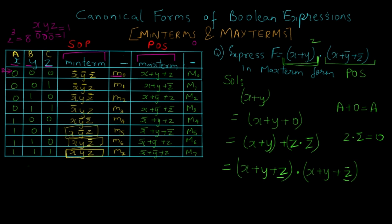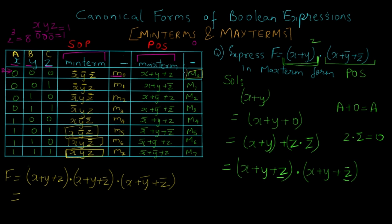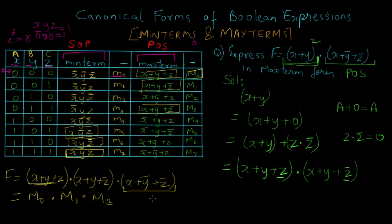So the final answer is: f equals (x OR y OR z) AND (x OR y OR z complement) AND (x OR y complement OR z complement). To represent this with max term designations, comparing with the table I can see (x OR y OR z) is M0, (x OR y OR z complement) is M1, and (x OR y complement OR z complement) is M3. So this is the canonical form of max terms, and it can be written as f equals the product of sums of (0, 1, 3).